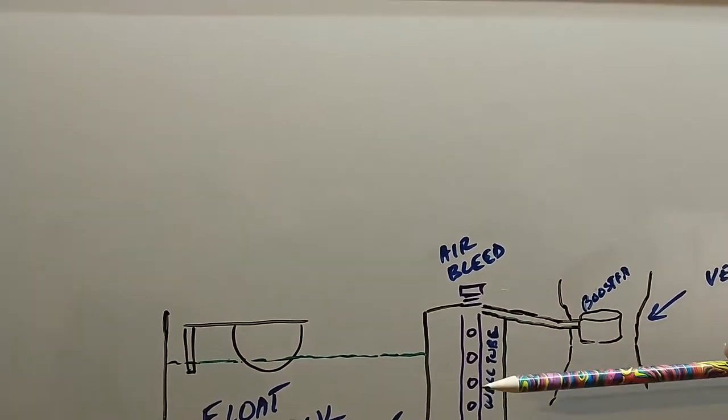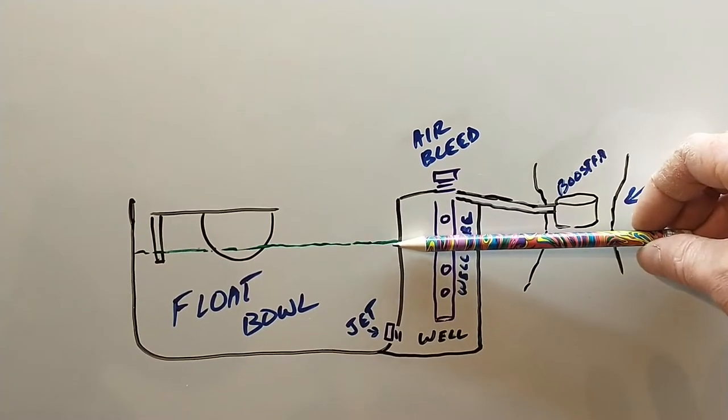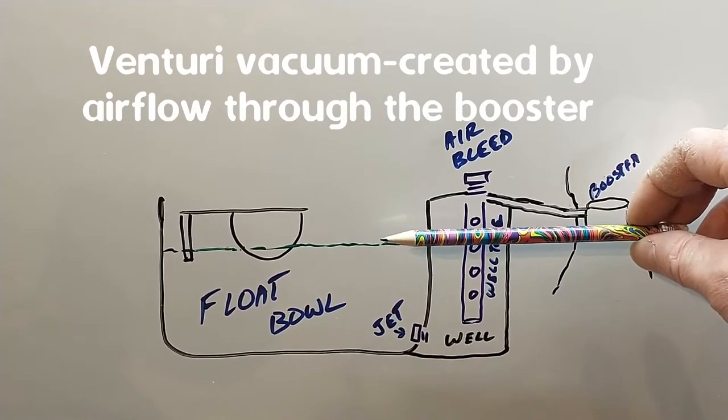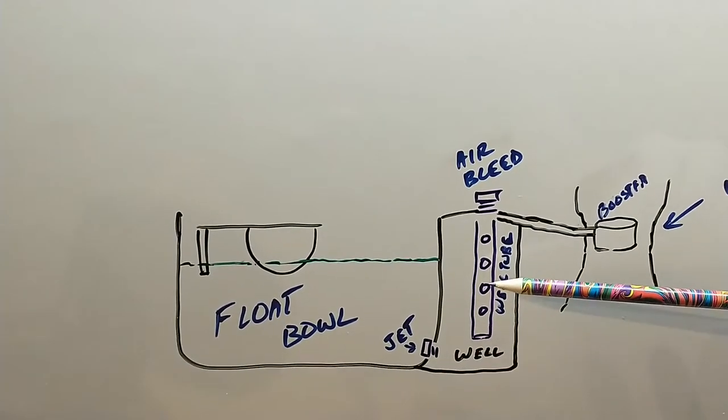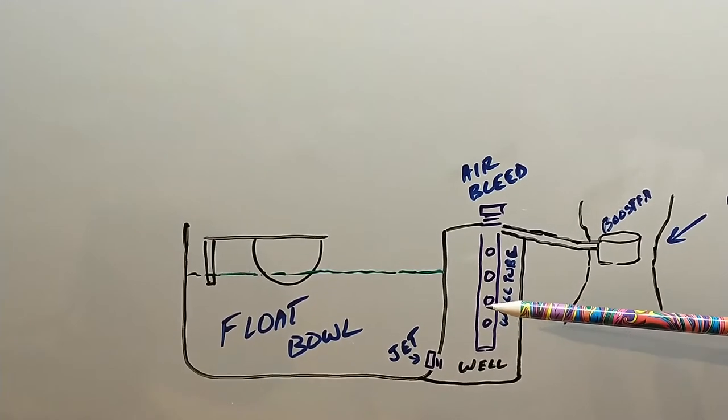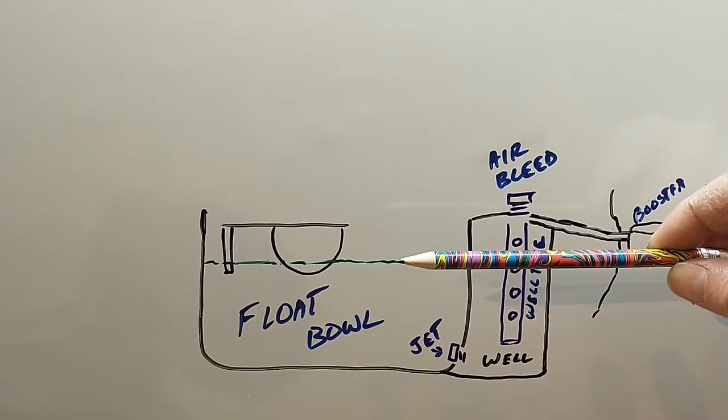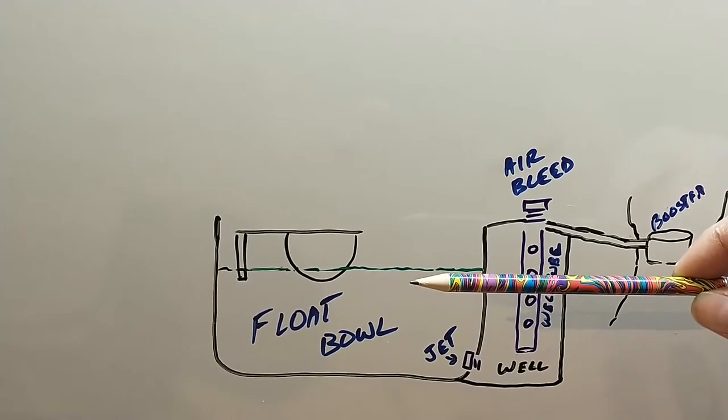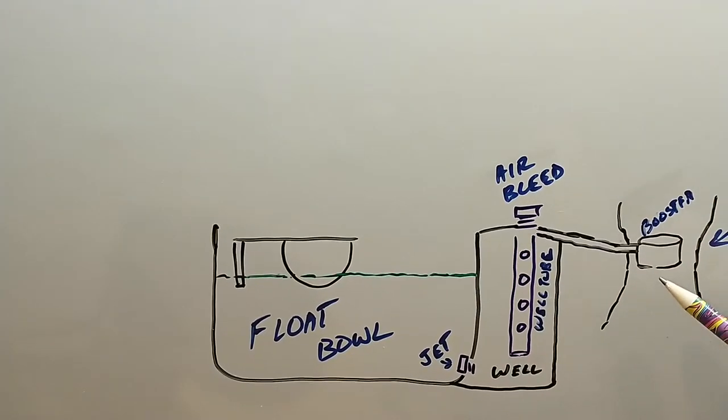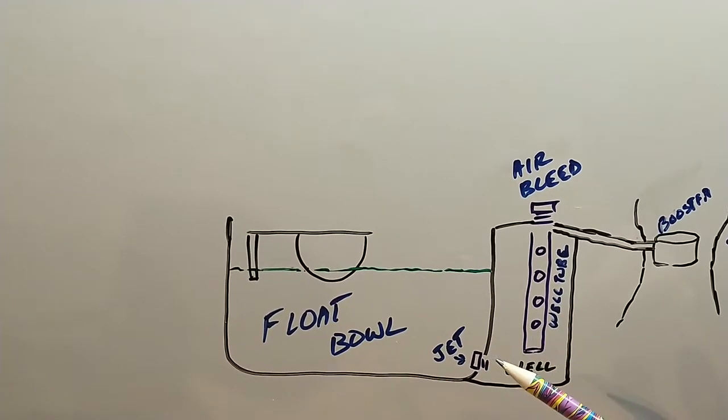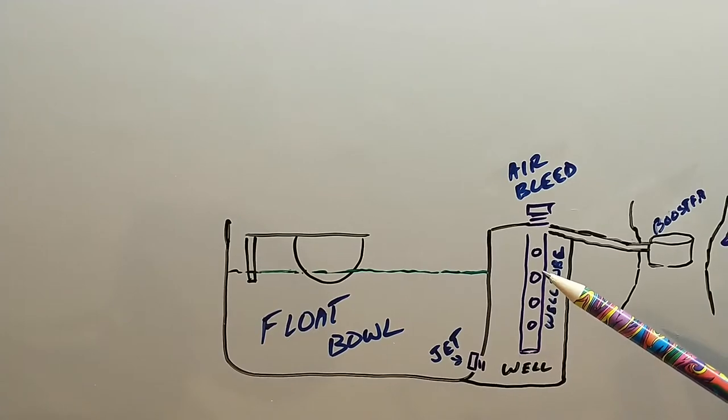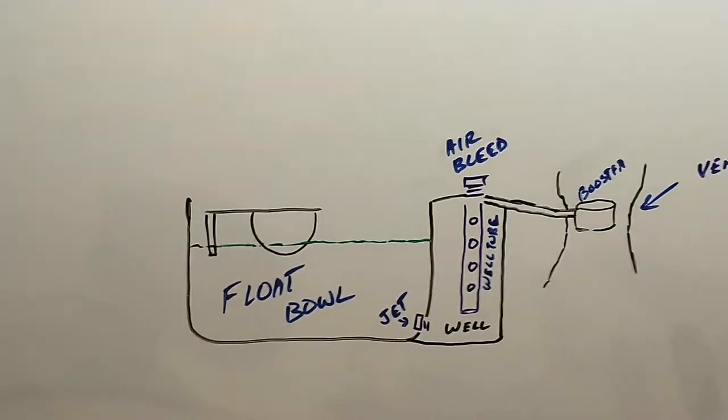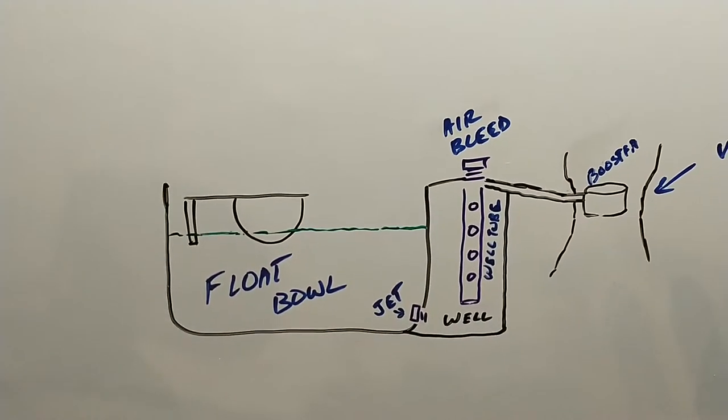So here is the interesting thing about the way well tubes function. At low engine speeds, our fuel level will be high in the main well. As venturi signal increases, what ends up happening is the jet can't supply enough fuel to the main well to keep the level in the well tube full. So as venturi signal increases the fuel in the main well will drop. And as it drops, it uncovers holes in the well tube. When the holes are uncovered in the well tube, the venturi signal will pull air through the holes instead of fuel out of the well. So we have a curve. As the fuel level drops with increasing engine speed, it pulls more air than fuel. So it ends up allowing that fuel flow to be linear and stay at the same air fuel ratio roughly.